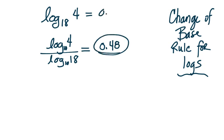So again, this is going to be 0.48. What does this mean in terms of an exponent? You can rewrite it that way if you want, but just to get a good feel for it, it means that 18 raised to the 0.48 power will give us the number 4. That's what it means in terms of exponents.